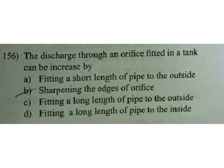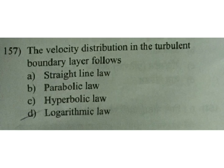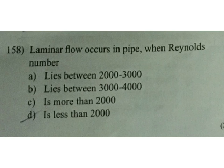The velocity distribution in the turbulent boundary layer follows: A straight line law, B parabolic law, C hyperbolic law, D logarithmic law. D is the answer. Laminar flow occurs in a pipe when Reynolds number is — this is very important, all exams ask this type of question. Its answer: for laminar flow, it is 2000.